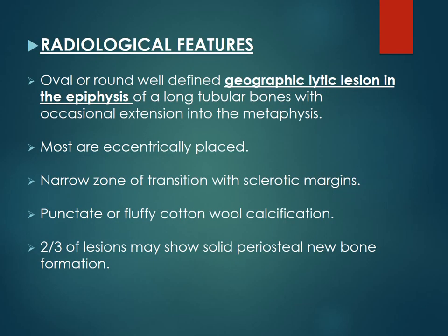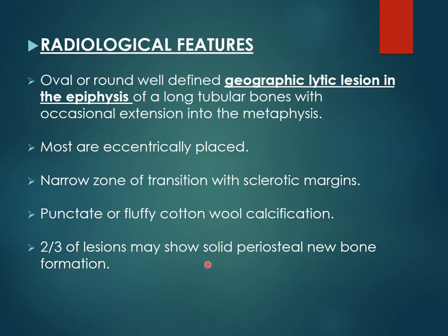On plain X-ray, the lesion of chondroblastoma usually appears as an oval or round, well-defined, geographic, lytic lesion in the epiphysis of long tubular bones with occasional extension into the metaphysis. Most lesions are eccentrically placed. There is a narrow zone of transition with sclerotic margins — indicating a non-aggressive or benign lesion. Punctate or fluffy cotton-wool type of chondroid calcification is seen, and two-thirds of lesions may show solid periosteal new bone formation.